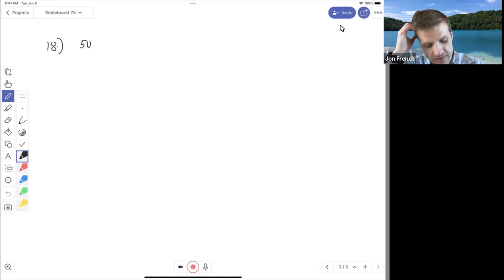So question 18 from the homework. We make a solution by adding 50 grams of toluene.